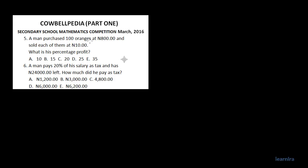A man purchased 100 oranges at 800 naira and sold each of them at 10 naira. From the first statement, the cost price for 100 oranges is equal to 800 naira.